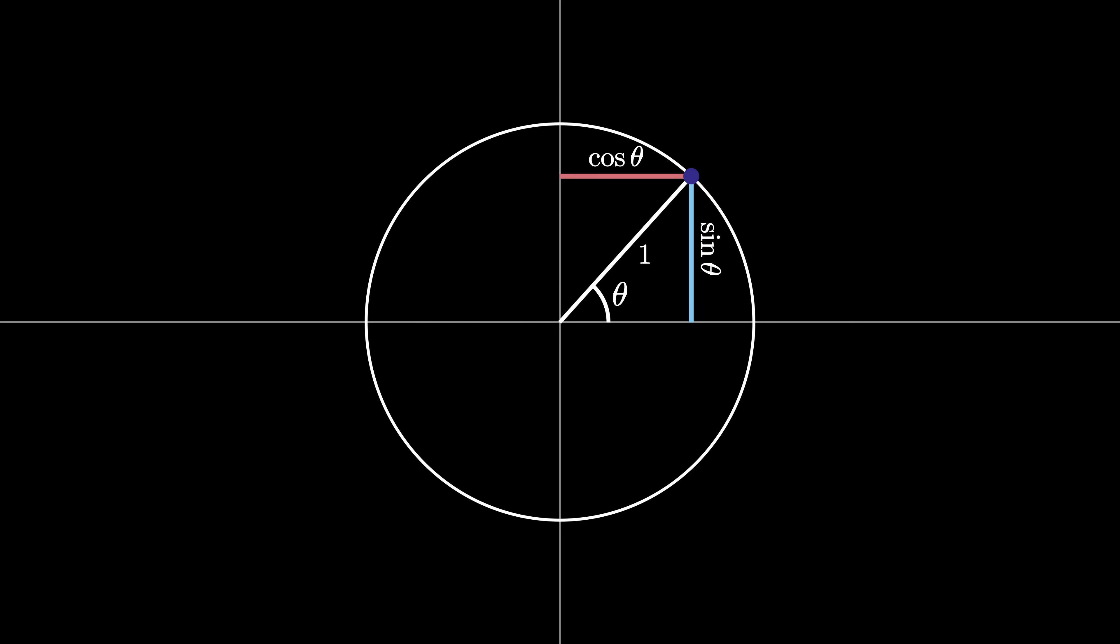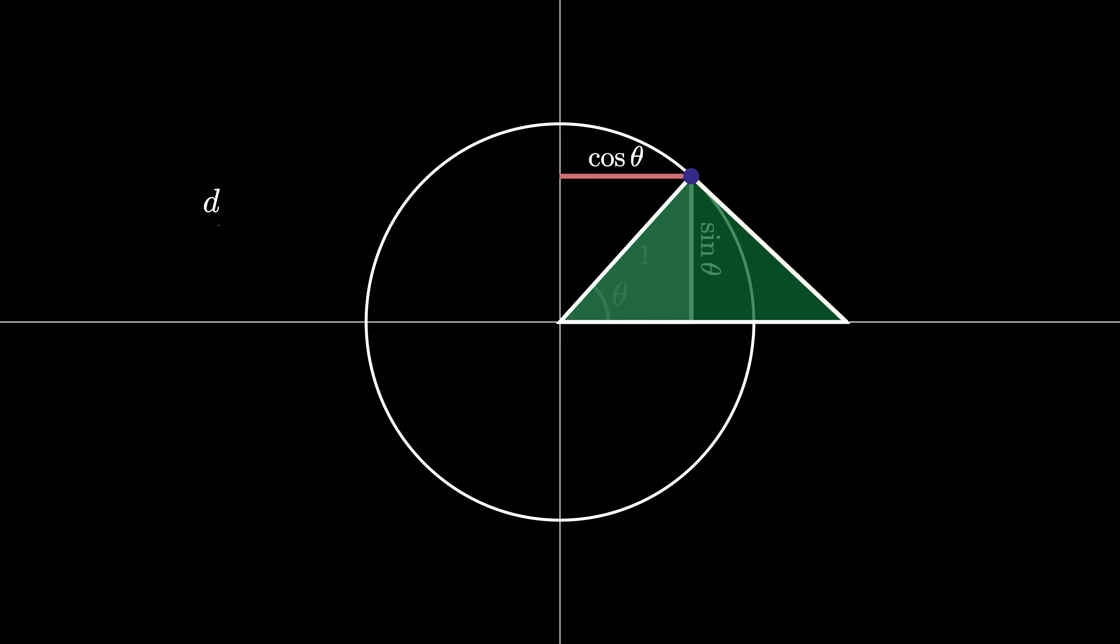Now draw the line that is tangent to the circle at the point and perpendicular to the radius. Let's label the line segment D. Because these two pictured triangles are similar, that means that the ratios of the side lengths are equal, so that D over 1 must be equal to sine of theta divided by cosine of theta. Therefore, the length of this new line segment must be the sine of theta over cosine theta, which we call the tangent of theta.